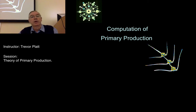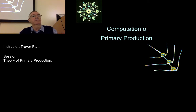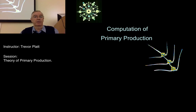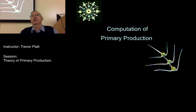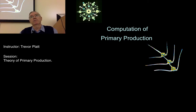We're going to talk about the computation of primary production using as input data remotely sensed data on the chlorophyll field collected by visible spectral radiometry. It's a big topic and we just want to introduce some of the basic ideas. For those who would like to follow the mathematical details, you should have received a file called pponi.pdf, which contains all the mathematics you would ever want to know about this topic.